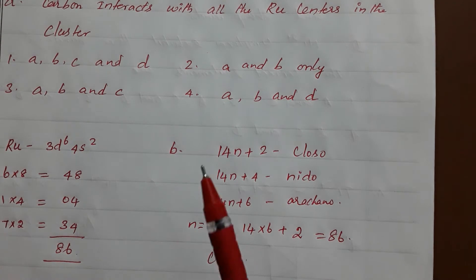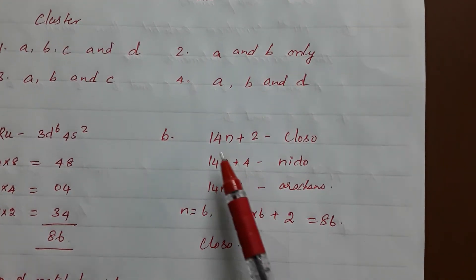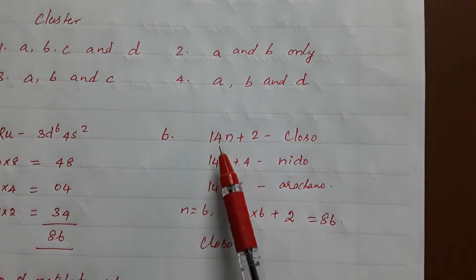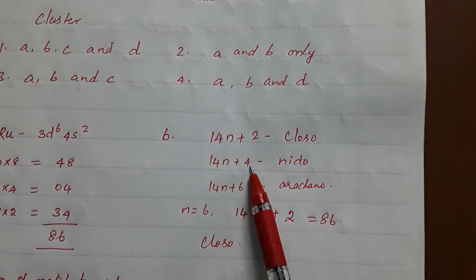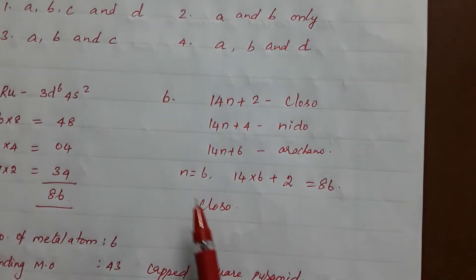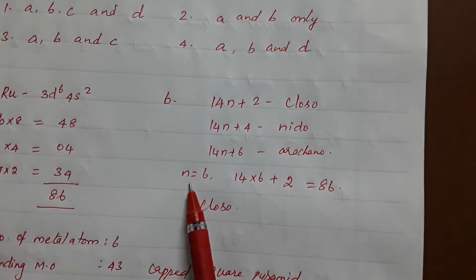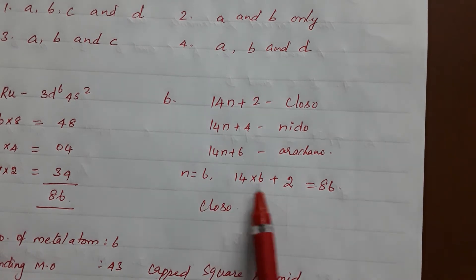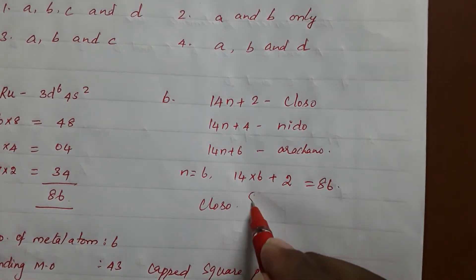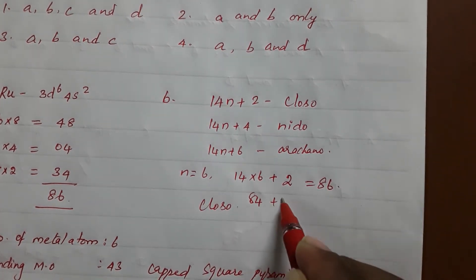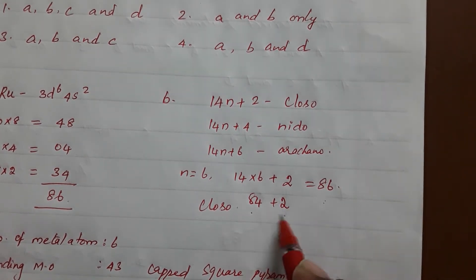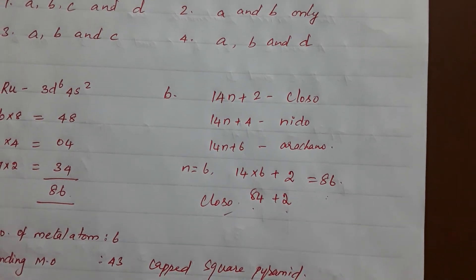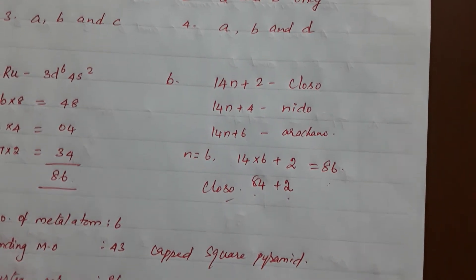Option B: it is a closo structure. Check with transition metal cluster formula 14n+x. If it is 2, closo. If it is 4, nido. If it is 6, arachno. Here the number of ruthenium is 6, so n=6. 14×6=84. Plus 2 gives 86. So it is 14n+2. So it is a closo structure. Statement B is correct.